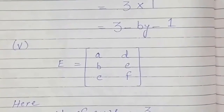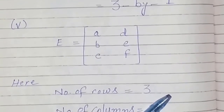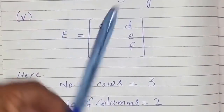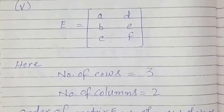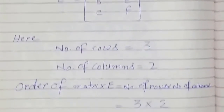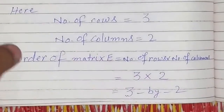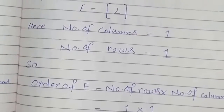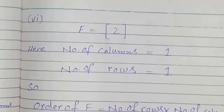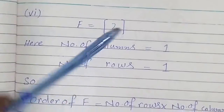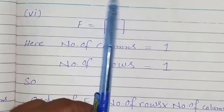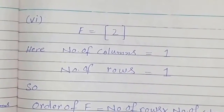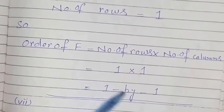Matrix E has 3 rows and 2 columns, so its order is 3 by 2 or 3 times 2. Matrix F has only 1 row and 1 column, so the number of rows is 1 and the number of columns is 1, giving an order of 1 by 1 or 1 times 1.